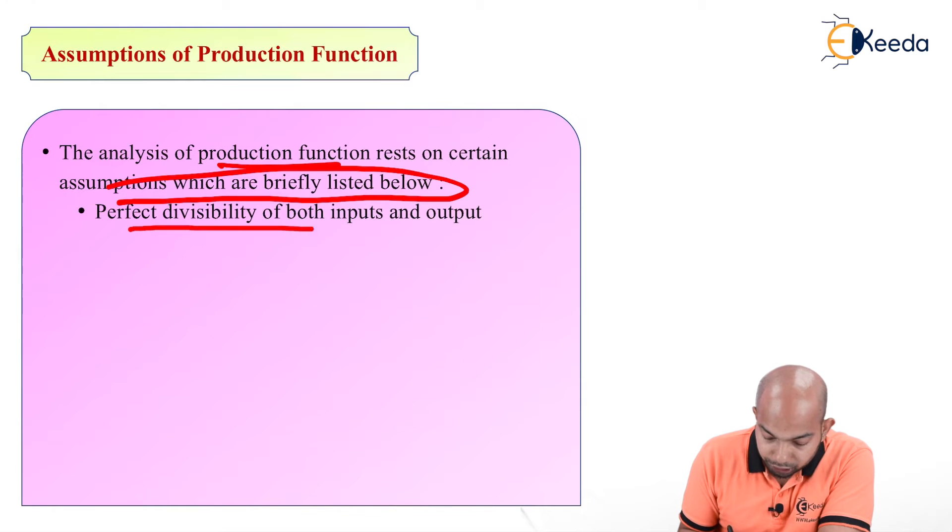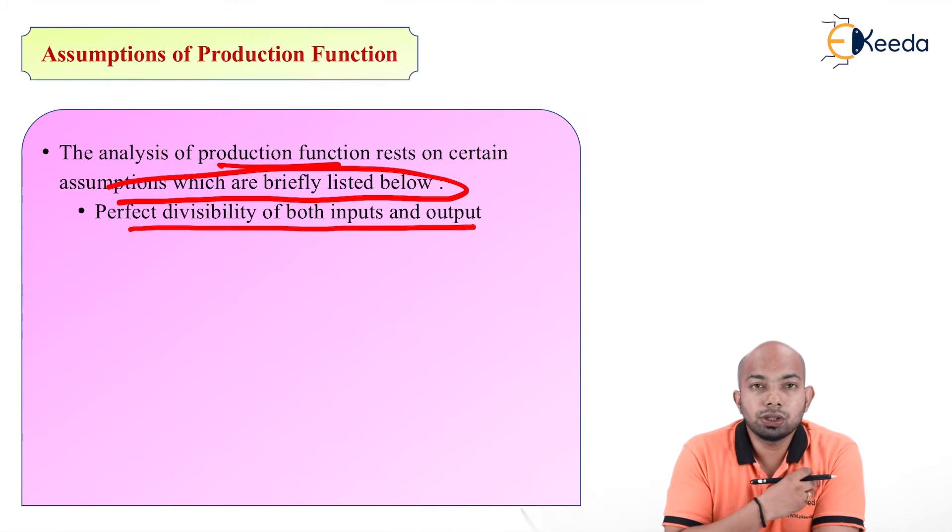First, perfect divisibility of both input and output. We assume that both input and output can be perfectly divided.